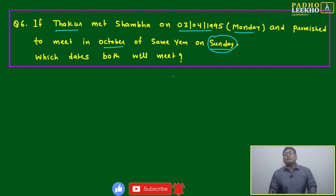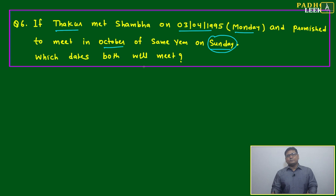Which date will fall down on Sunday? That day only, which dates both will meet. Then how many options do they have for meeting? What they are asking: in October 1995, how many Sundays are there? How many Sundays?